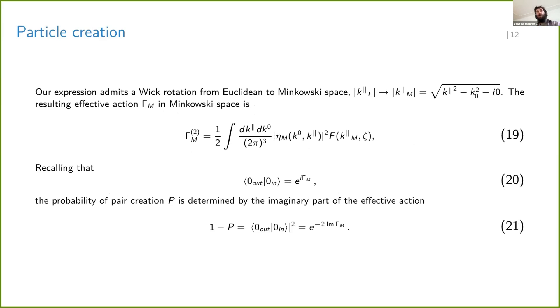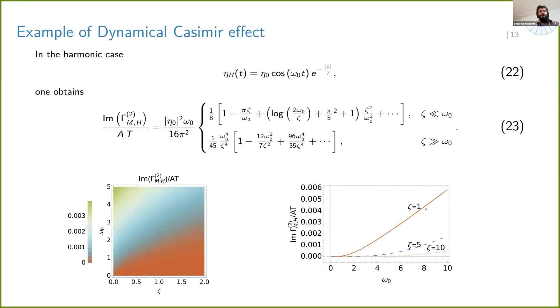The important thing about these non-analyticities is that you can go and work in Minkowski space. After you do this rotation, you can try to see the persistence of the vacuum or you can try to read the probability of pair creation. I will just skip this, but if you have any questions you may ask me.